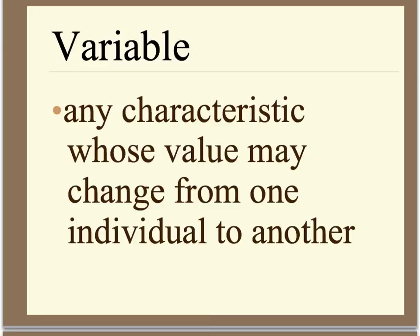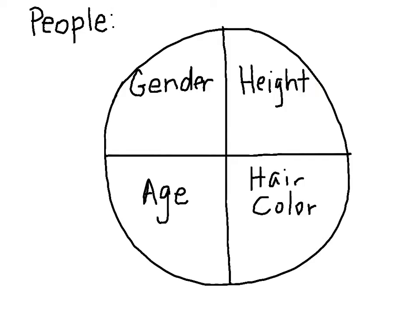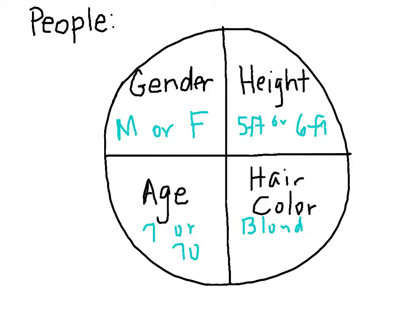Variables are characteristics, or you can think of them as descriptors of people or things, and they can be words or numbers. For example, if we're talking about people, we might discuss their gender, height, age, or hair color. They might be male or female, five feet or six feet, seven or 70 years old, and have blonde or brown hair. All of those different things are variables that can change from one person to the next. Height can also be described as tall or short, and age can be young, old, teenager, or child.